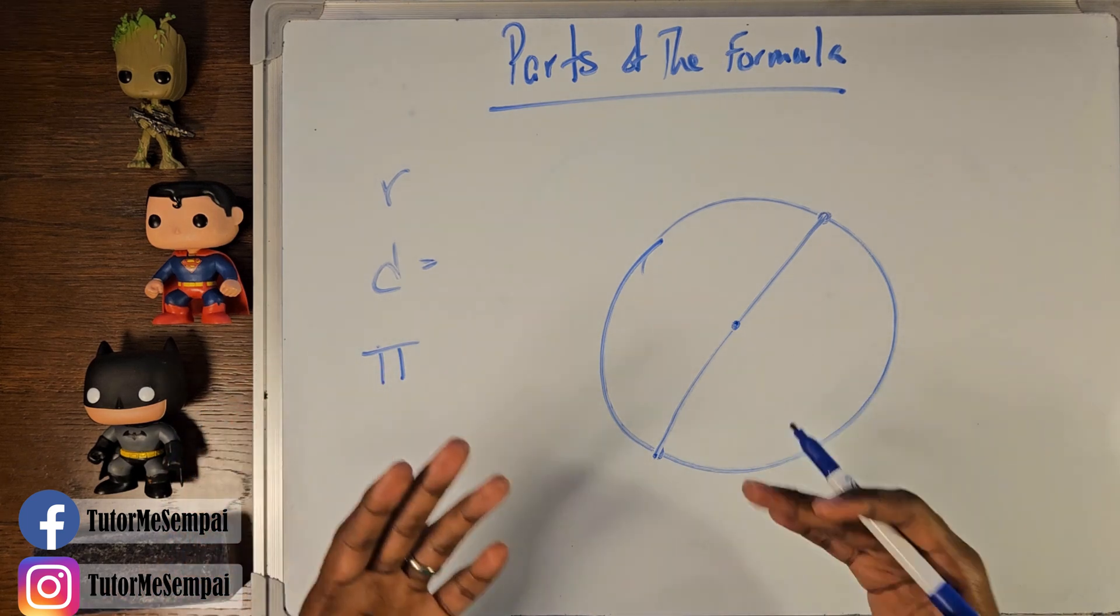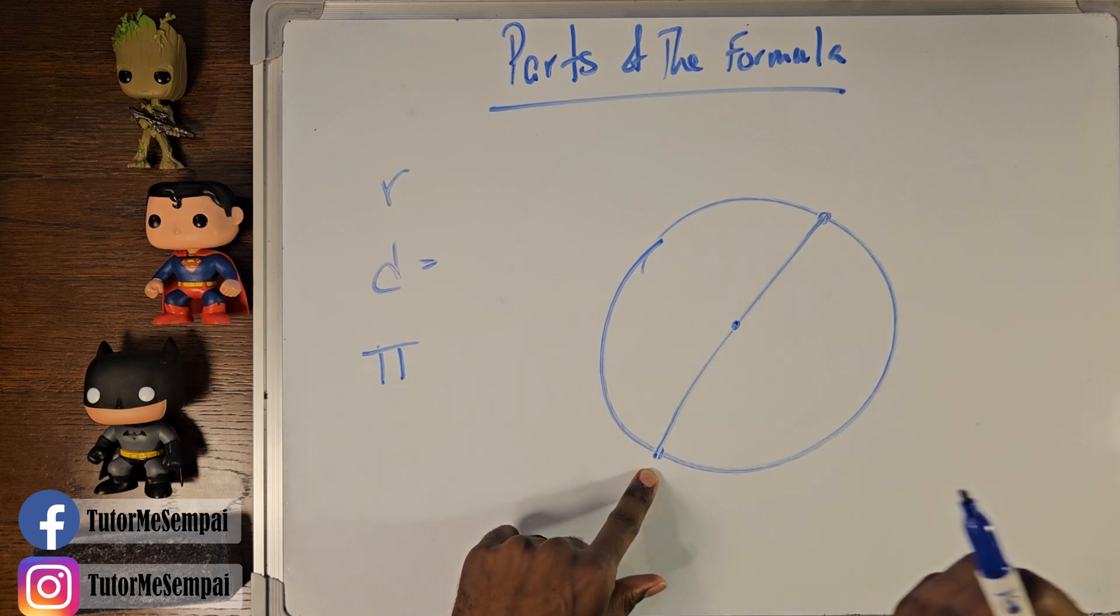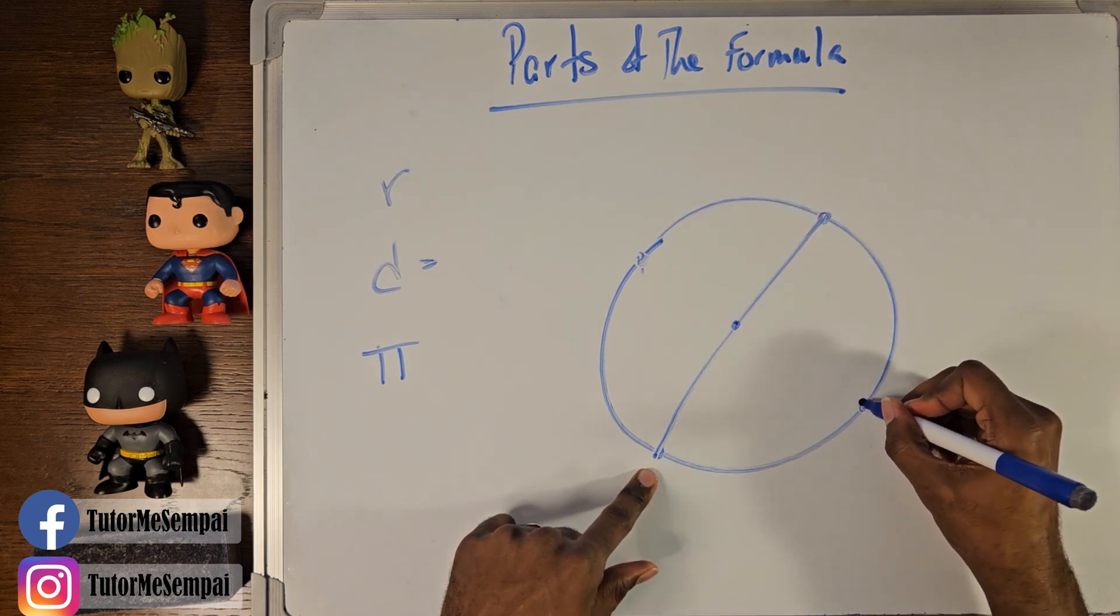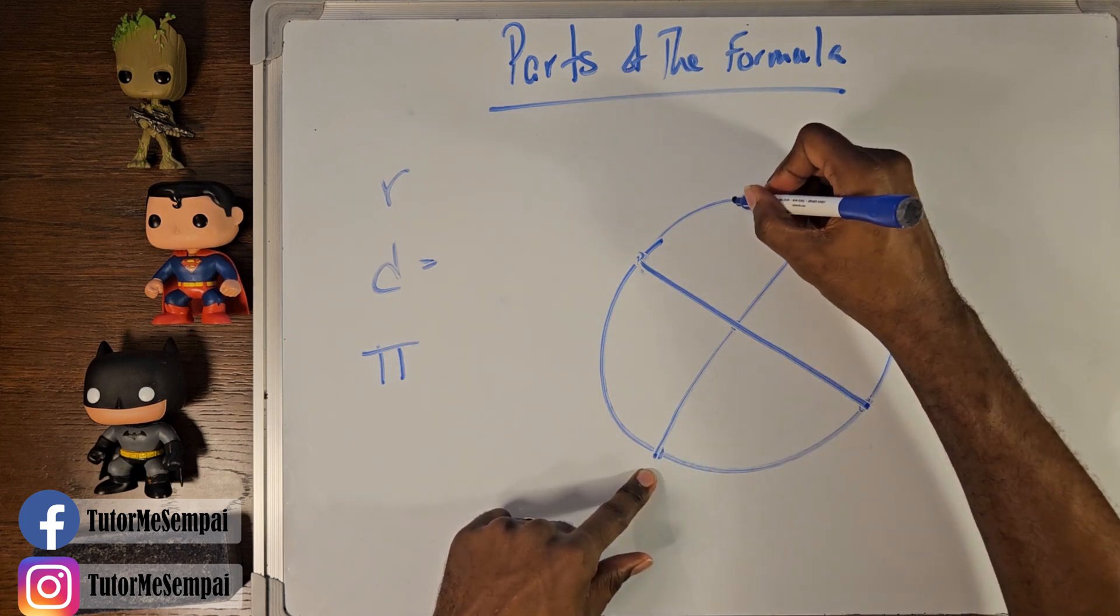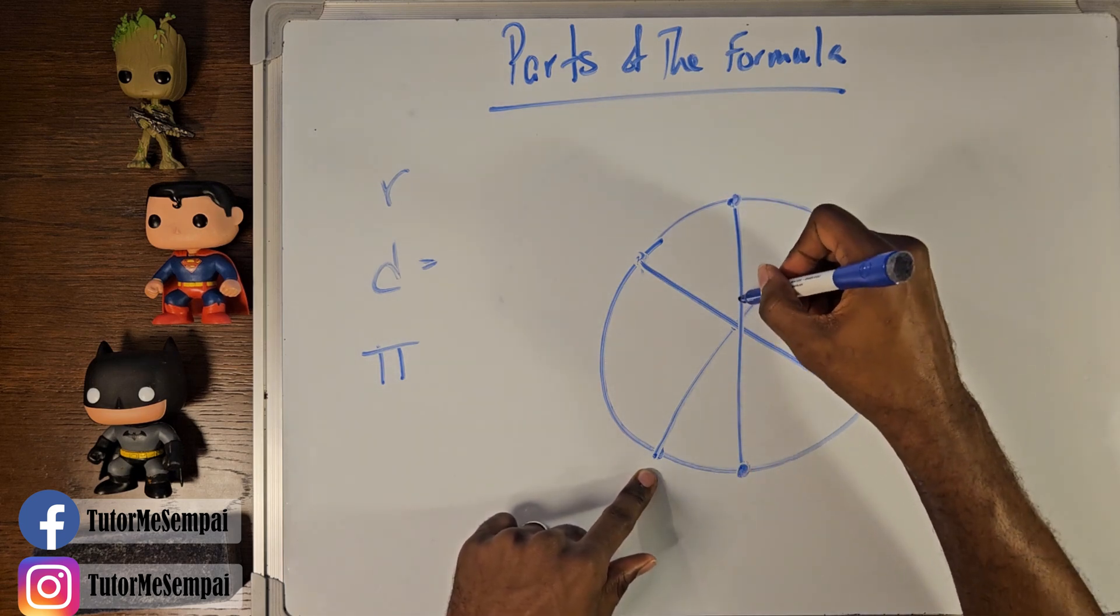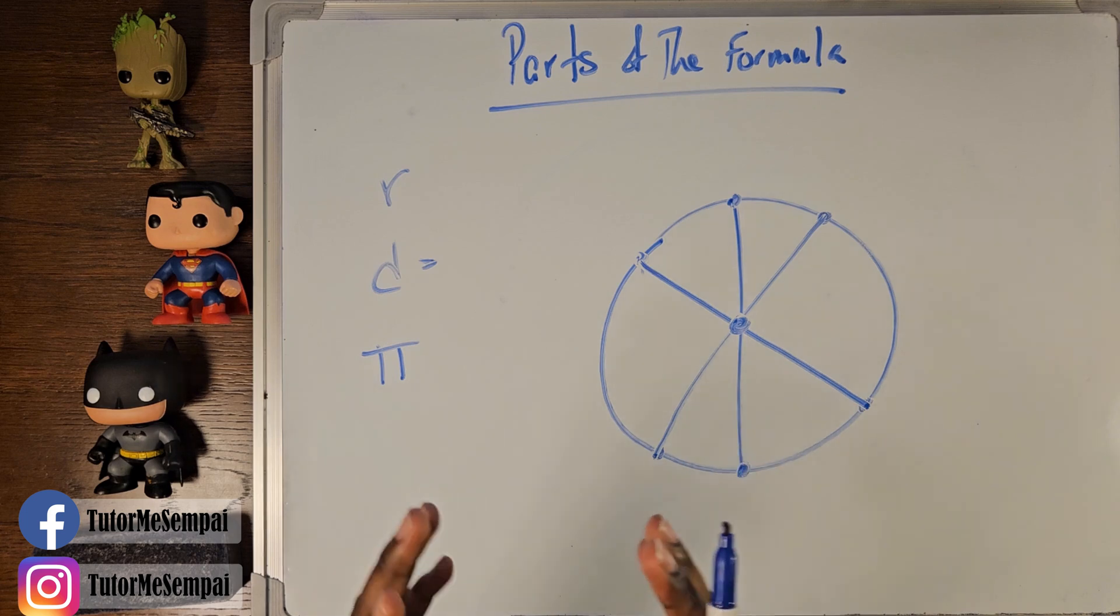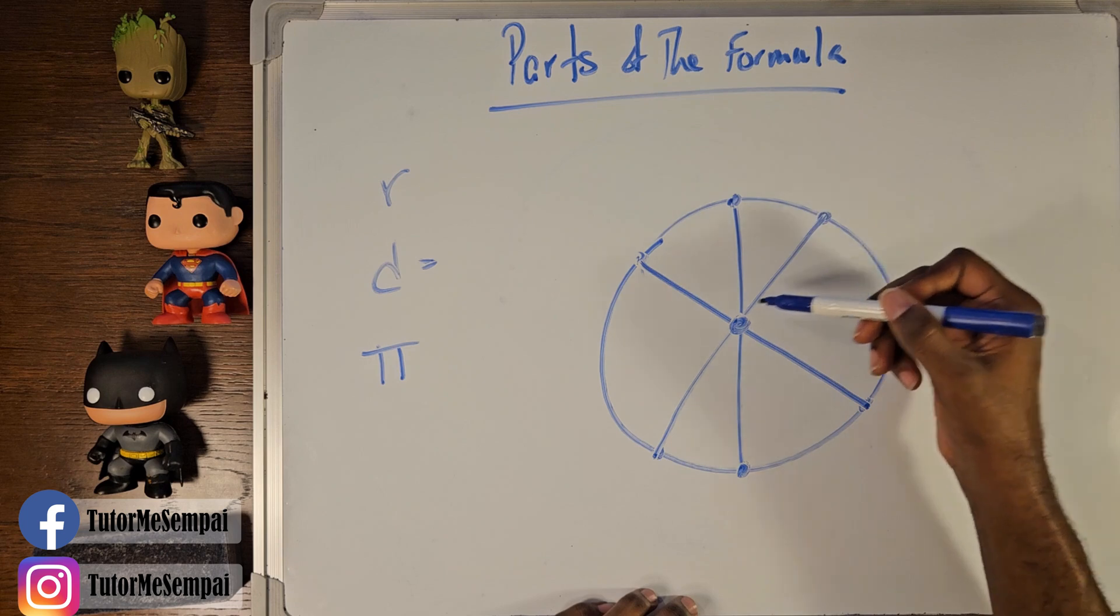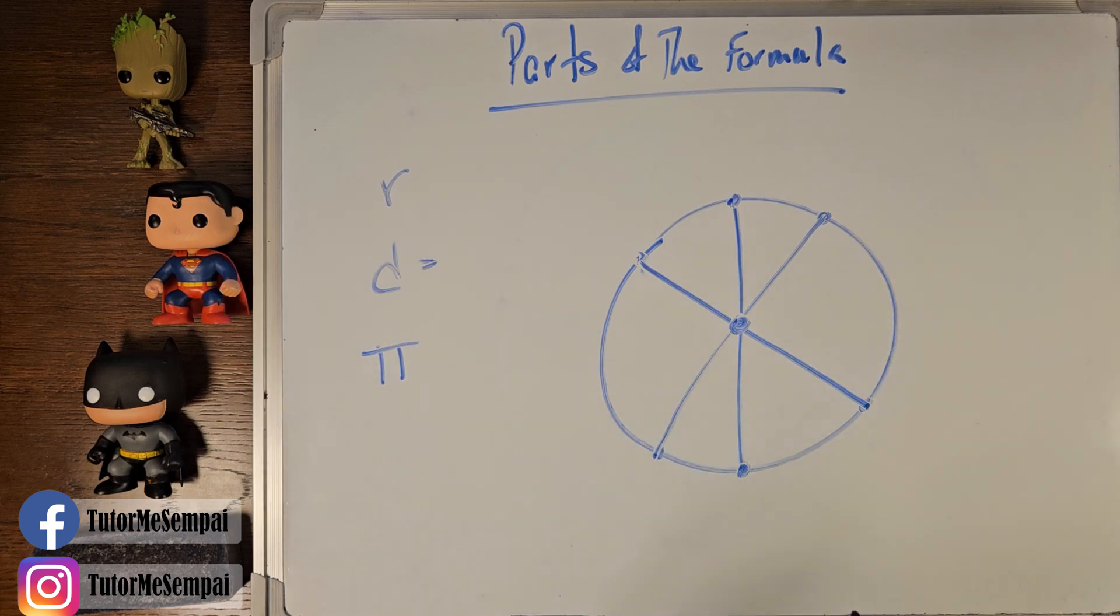And one cool thing about your diameters and your radius is it doesn't matter how you draw your diameter or your radius, it's never going to change its value. As long as you're going through the center of your circle and you have your line segment with these two points, it's always going to be the same diameter for your circle. Thus, you're always going to have the same radius for your circle. The values never change for your particular circle.